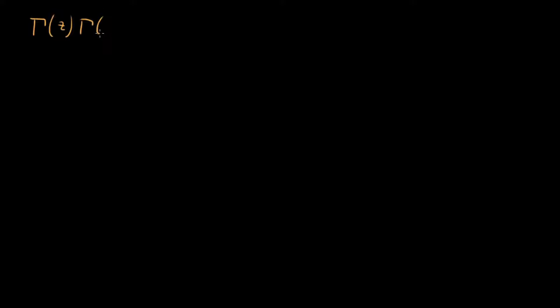In this video, I want to derive Euler's Reflection Formula. Euler's Reflection Formula says that if you take gamma of z, the gamma function of z, and you multiply it by gamma of minus z, then what you get is minus pi divided by z times sine of pi z.